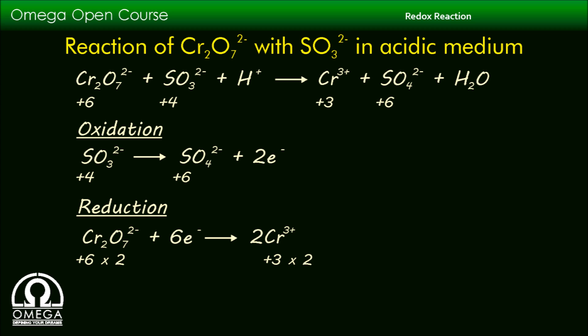Now only two electrons are released in the oxidation process and six electrons are absorbed in the reduction. We must multiply the oxidation half by 3 to balance the number of electrons released in oxidation and absorbed in reduction.